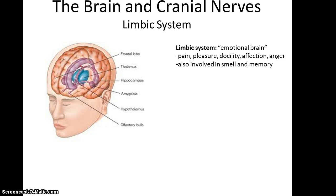Next, we talk about the limbic system. The limbic system is considered the emotional brain — the place where you can find pain, pleasure, docility, affection, anger. It's basically made up of tissue in the inferior portion of the cerebrum and the superior portion of the diencephalon. It's also closely linked to smell and memory, because you can smell something that brings back memories — like your grandma cooking bread when you smell bread cooking.